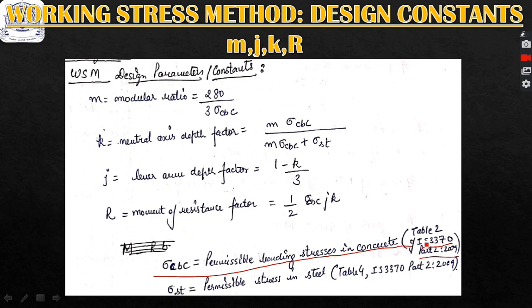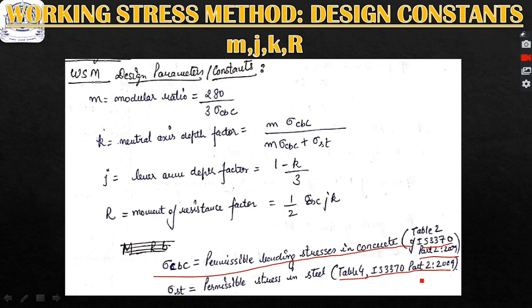IS 3370 Part 2 gives the various permissible stresses — bending stresses, tensile stresses, compressive stresses — for concrete as well as steel according to the grade. K is the neutral axis depth factor given by M·sigma_cbc divided by (M·sigma_cbc + sigma_st), where sigma_st is the permissible stress in steel obtained from Table 4 of IS 3370 Part 2.